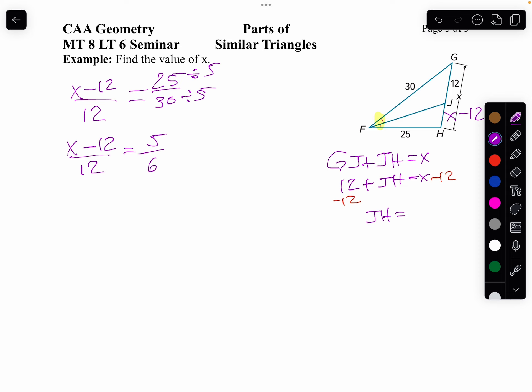And I'll use equivalent fractions again. Notice, if I take 6 times 2, I get 12. So in other words, 5 times 2 is 10. So my equation is x minus 12 equals 10.